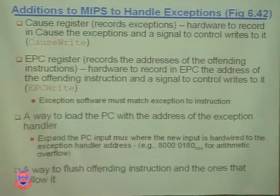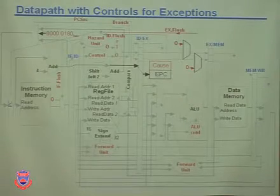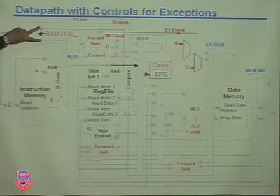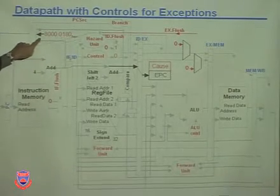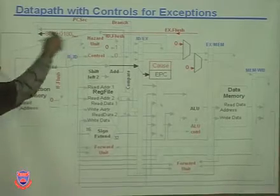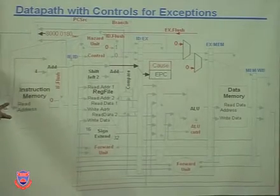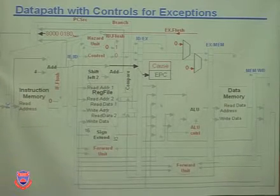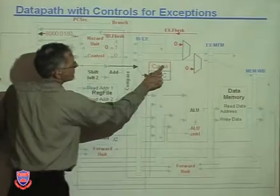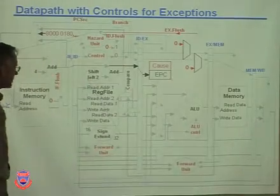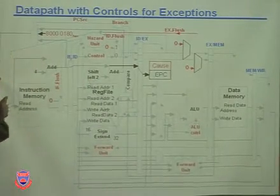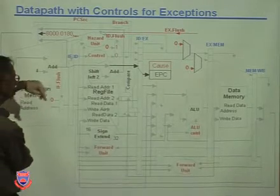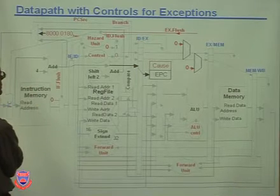In MIPS, this hardwired address is used for arithmetic overflow. We also need to flush the offending instruction and the ones following it — we already have that hardware in our pipeline. The PC MUX used to have two inputs but now has three: when there's an exception, we load the exception handler address. We also need to record the cause in the cause register and store the PC value in the EPC register.